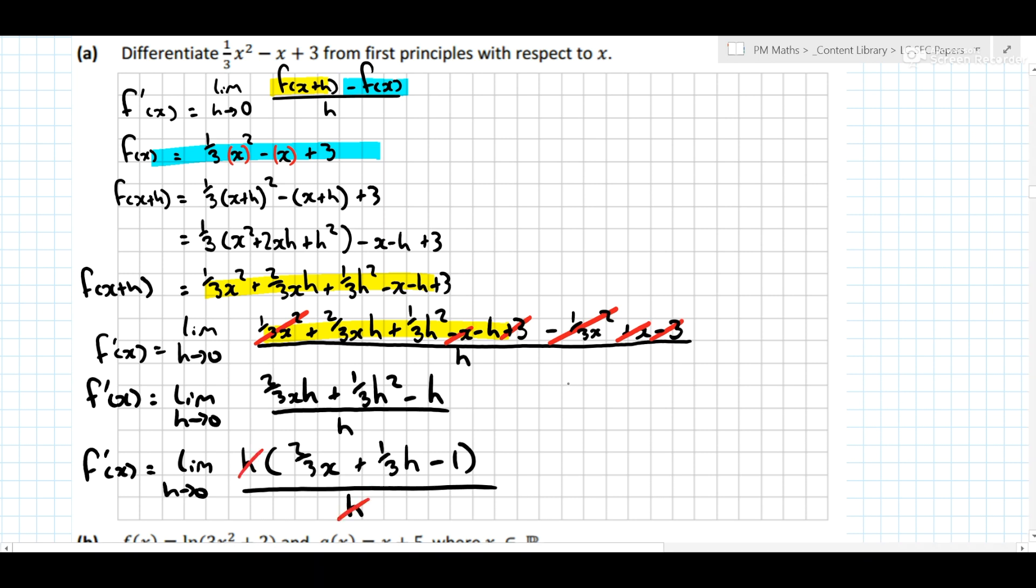So we're now just left with f dash of x is equal to limit h goes to zero. 2 over 3 x plus 1 over 3 h minus 1. Now there's no h on the bottom line, so now I can set h is equal to zero.